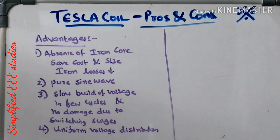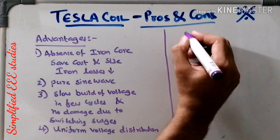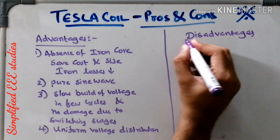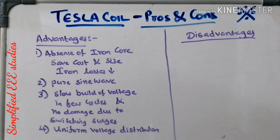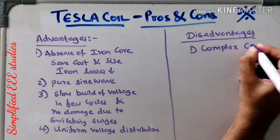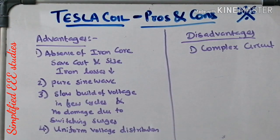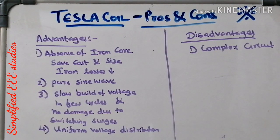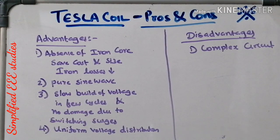Every system has pros and cons, so now let us figure out a few drawbacks of the Tesla coil. The first drawback is that the circuit is too complex. There is a high-voltage auto transformer, then C1, then a spark gap, then a tuned coil, then an output capacitor — all of these make the system totally complicated.